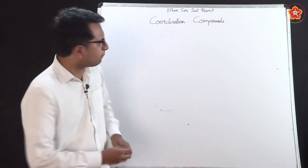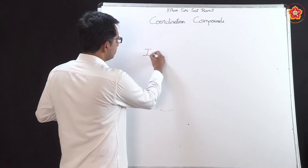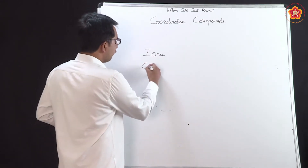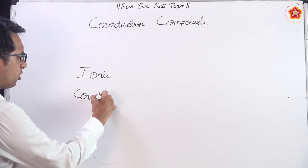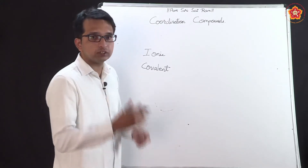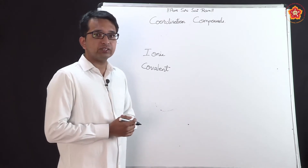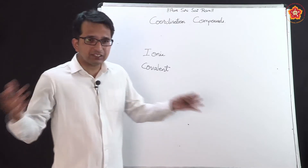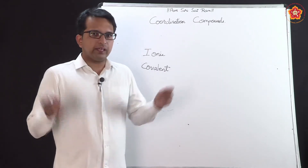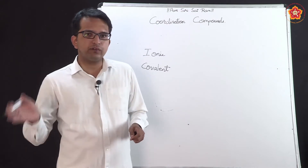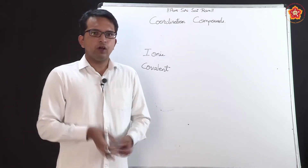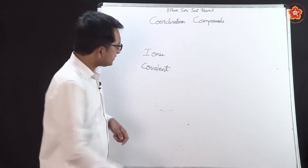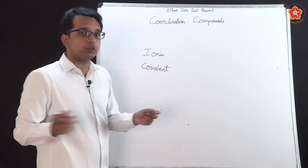We have seen about something called ionic bonding, which we came across in all the lower classes. We also came across something called covalent bonding. Ionic bonding was that sort of combination where electrons were transferred from one atom to another.